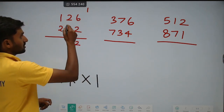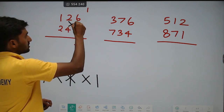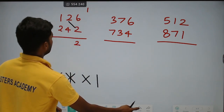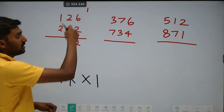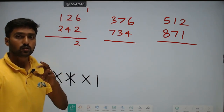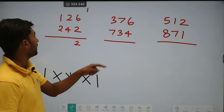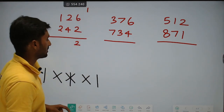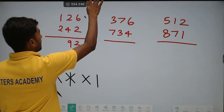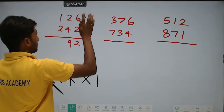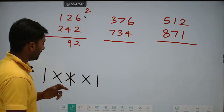Next one is cross: 2 into 2 plus 4 into 6. In the cross, 2 into 2 is equal to 4, plus 4 into 6 is equal to 24. So 24 plus 4 is equal to 28. Already carry 1 available, so 28 plus 1 is 29. New carry — old carry is equal to carry.